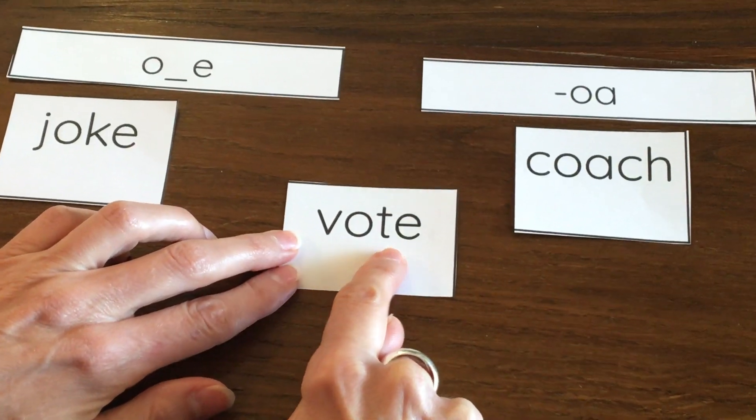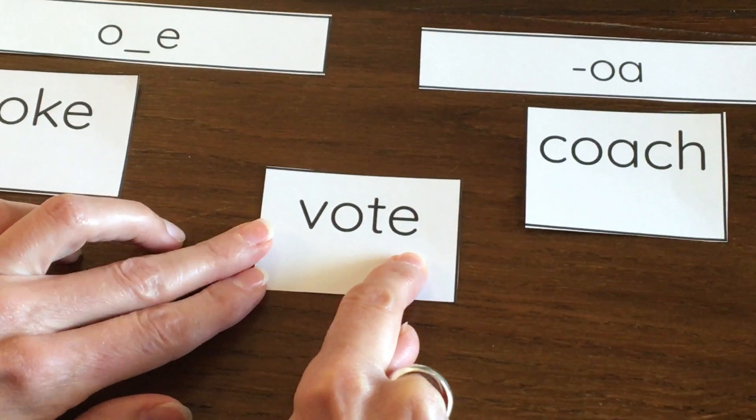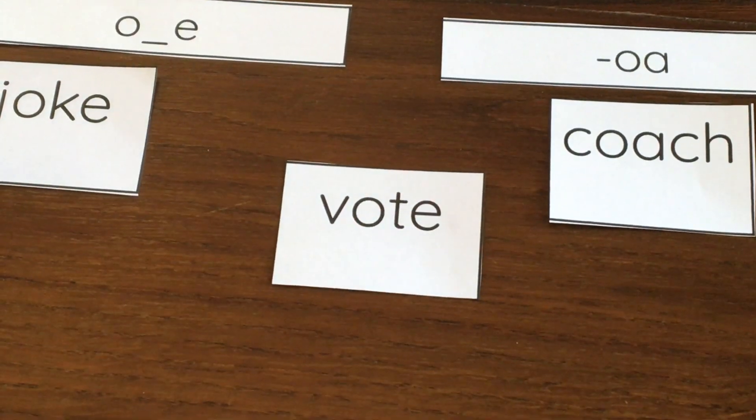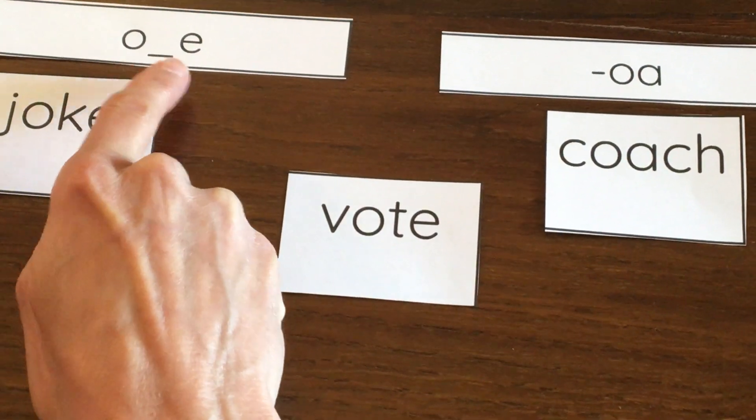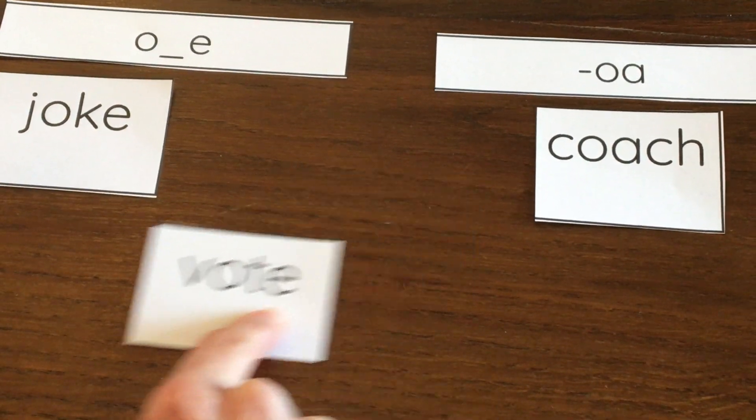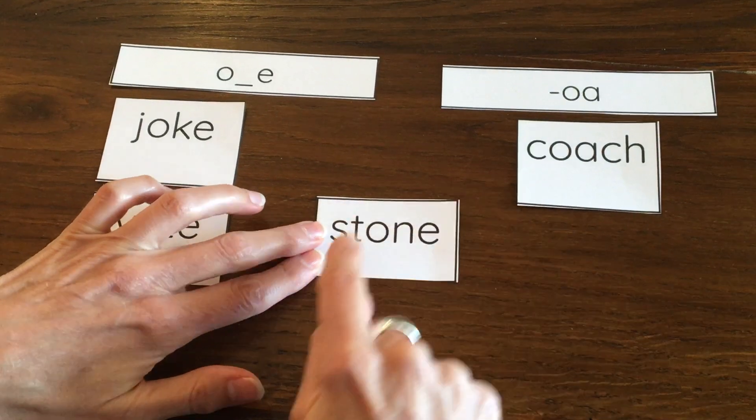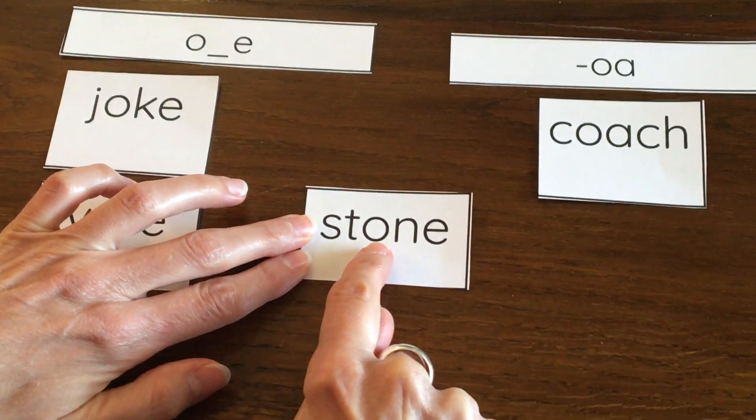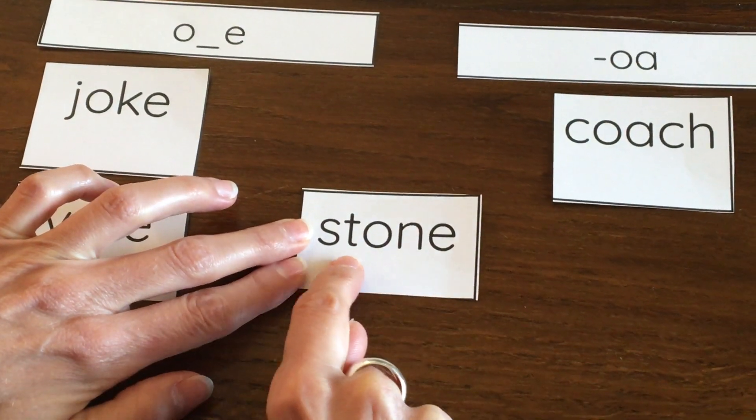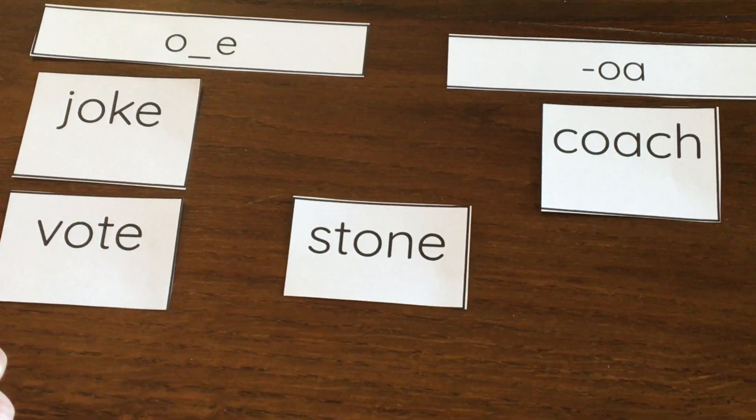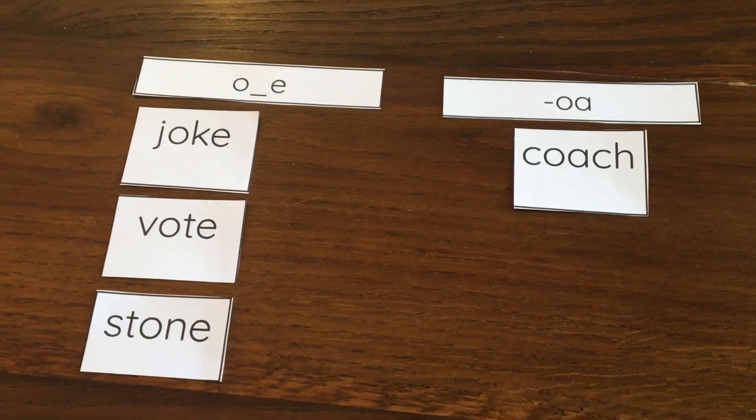Vote. Like sometimes in class, we raise our hands to vote for inside or outside recess. Notice the silent E at the end. Keep helping me. Let's read stone. A stone is another word for a rock. There's that silent E at the end.